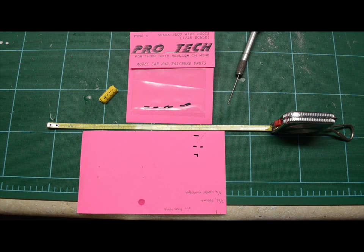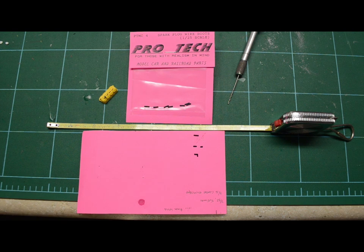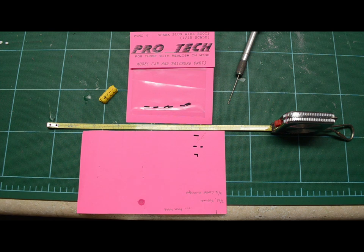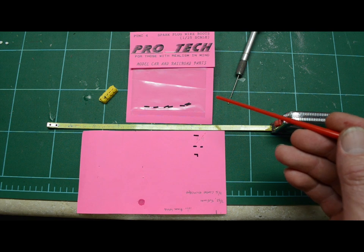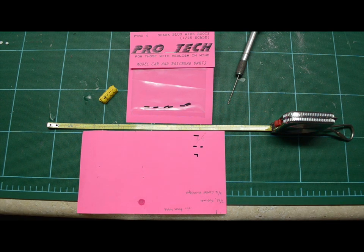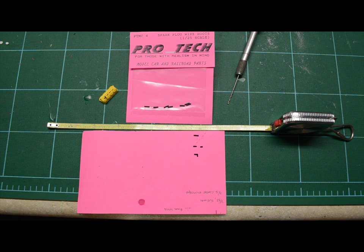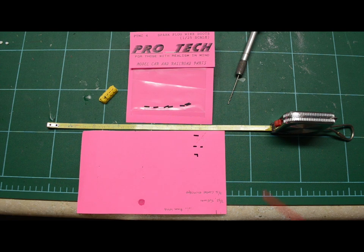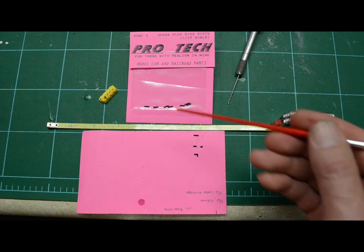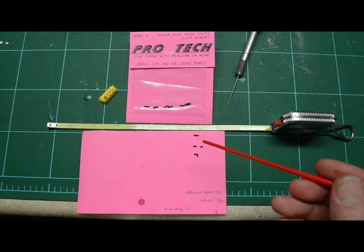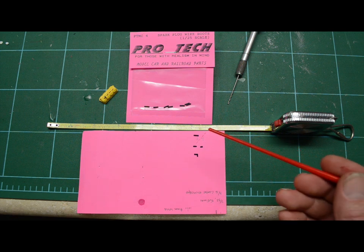To make the spark plug boots, we're using Pro-Tech part number PTMC4. Now each spark plug boot is already cut, except for this particular model we want angled boots. In a normal V8 engine, like in a street car, you may have just a straight boot onto the spark plug, in which case you'd probably drill out the hole in the block where the spark plug would be and insert this spark plug boot directly in. Now in this case, we want to make angled boots, and you can do the same thing for a street car engine also.